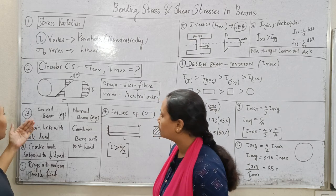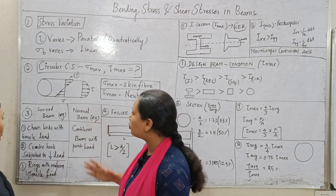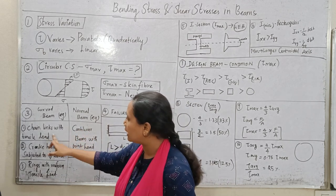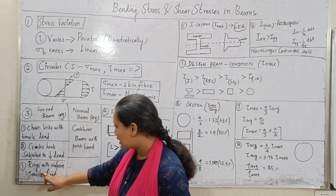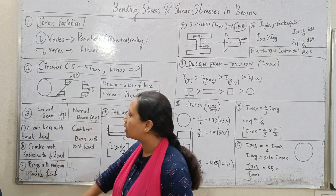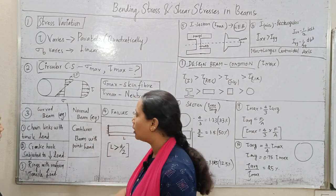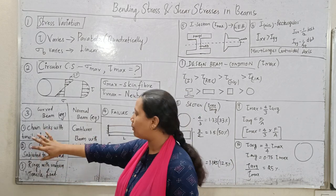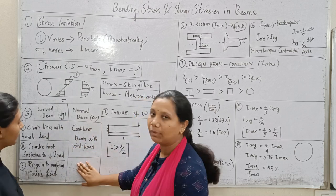Next one is examples of curved beam and normal beam. Curved beam: chain links with inside load, crank hook subjected to load, rings with uniform inside load. These are the curved beam examples. Normal beam is the triangular beam with point load. These are the normal beam examples.